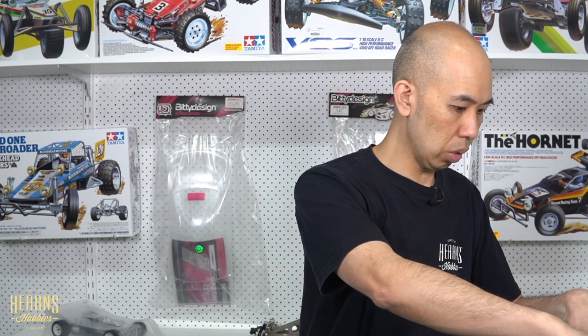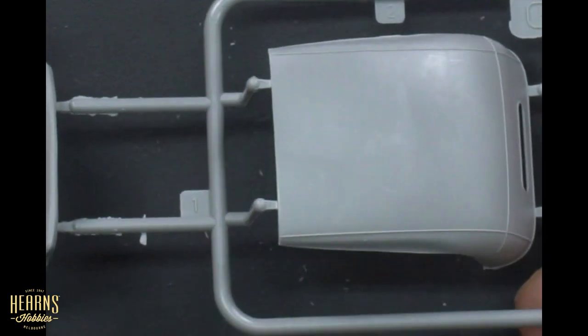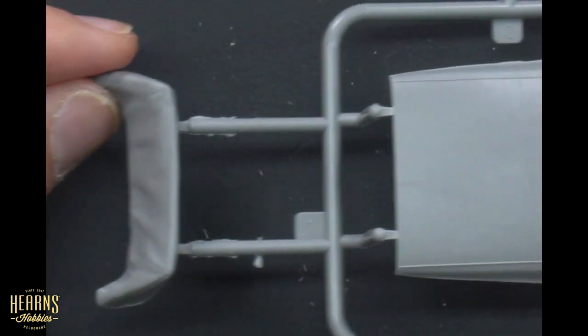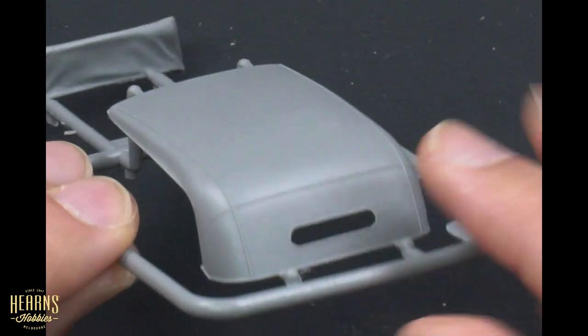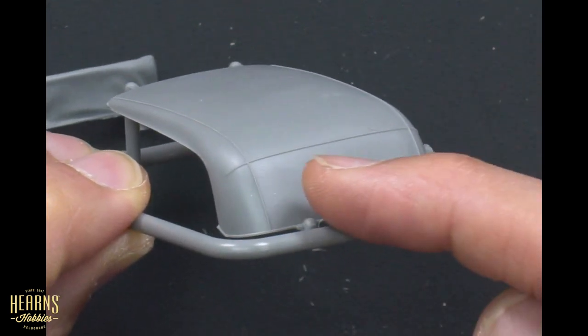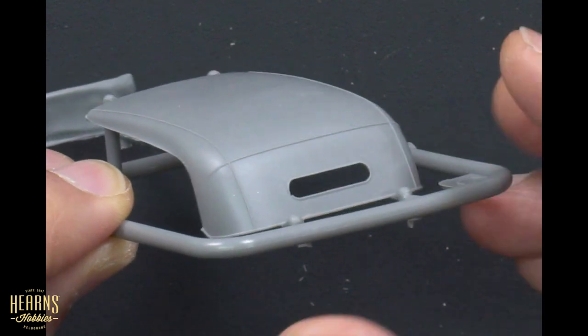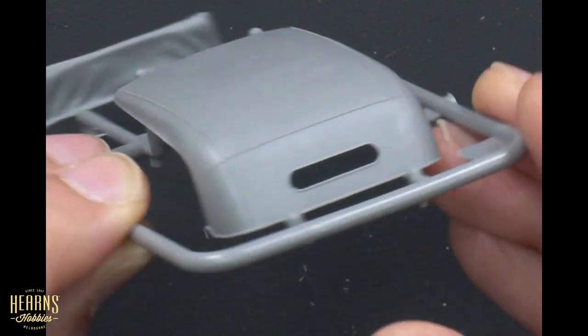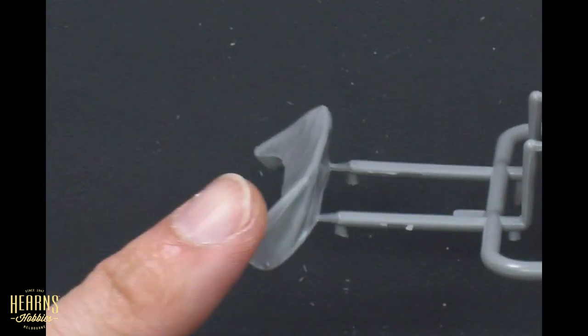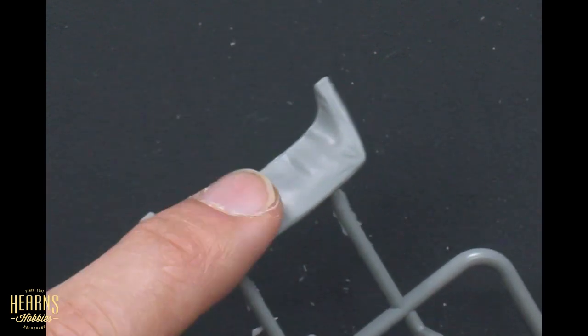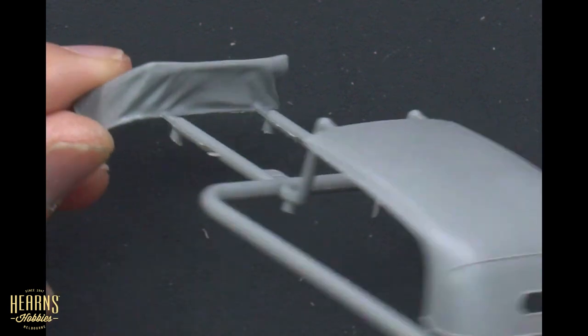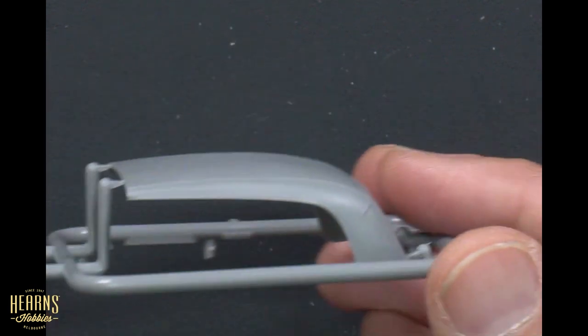This part here is a small section with the roof. You either have the hardtop, so there's the rear window. You can fit that in there if you're doing the hardtop, or you're going to have a folded down cabriolet. Got some nice folds in there for the fabric. Nice to have those options.